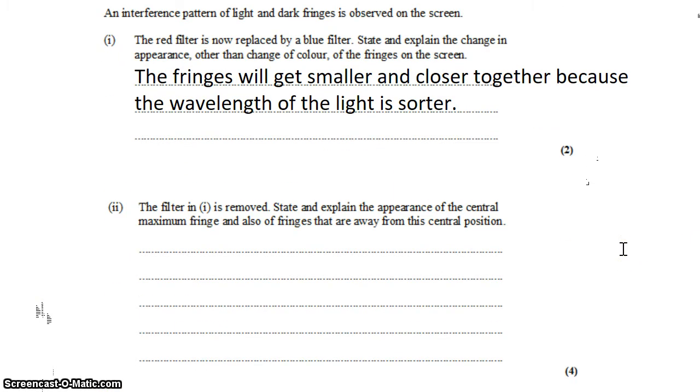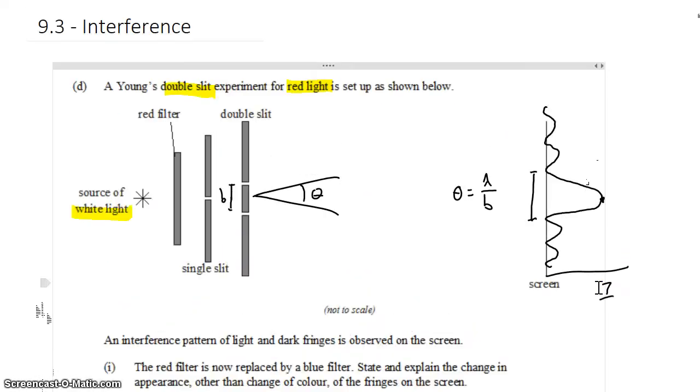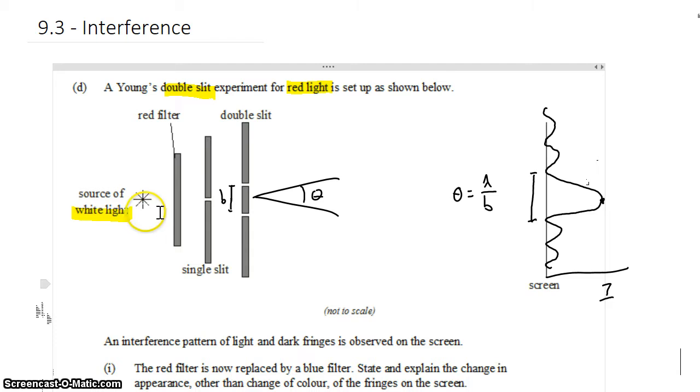Part 2 says the filter is now removed. State and explain the appearance of the central maximum fringe, and also the fringes that are away from the central position. So we're going to get rid of the blue filter entirely and allow the white light to go through the double slit experiment.